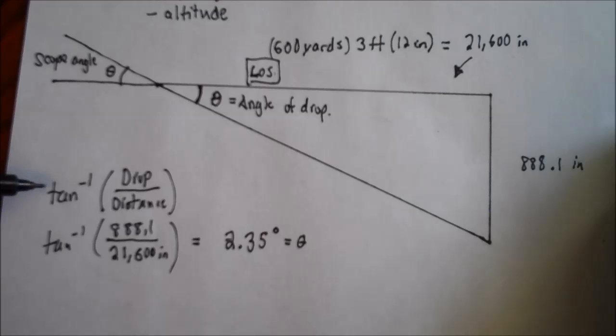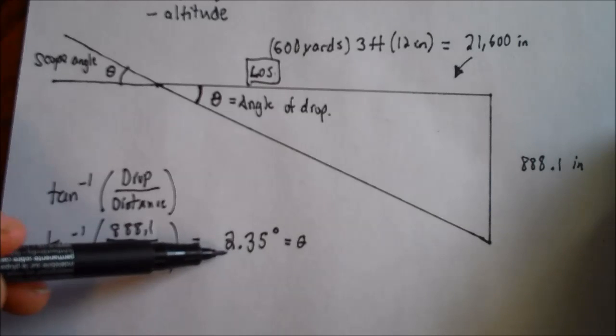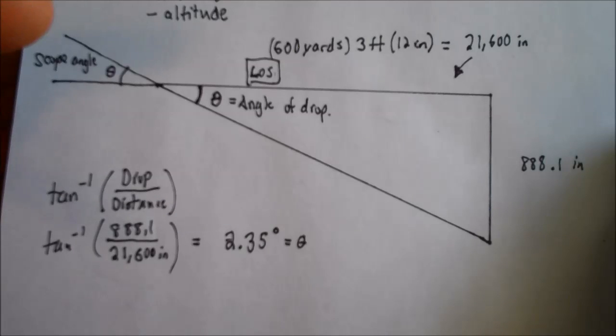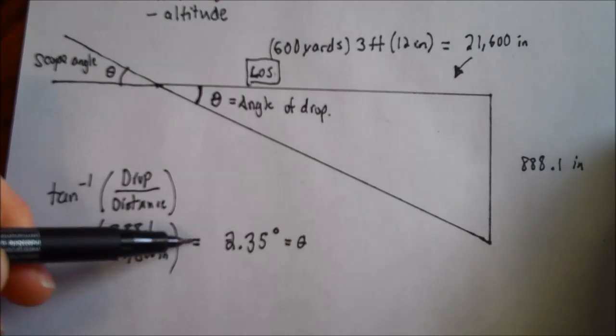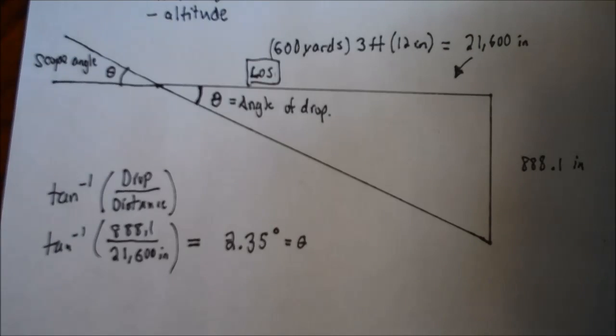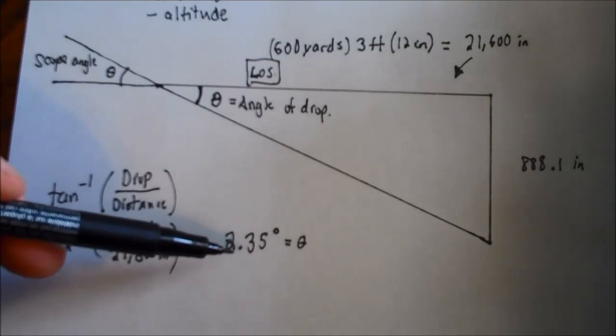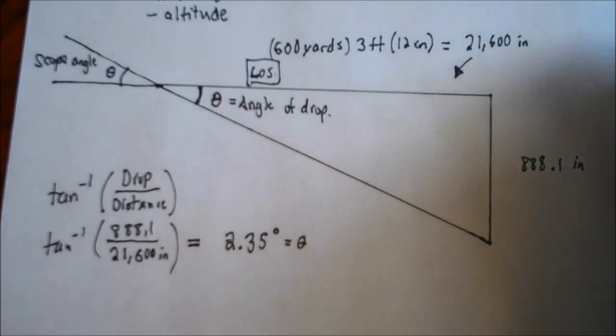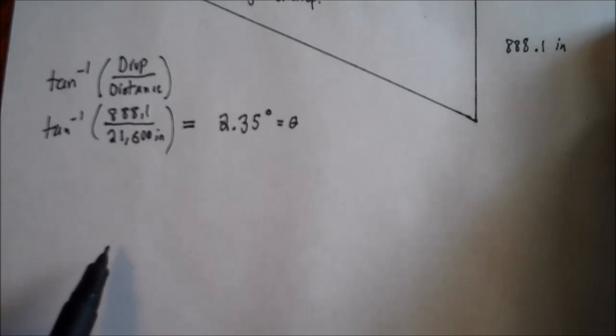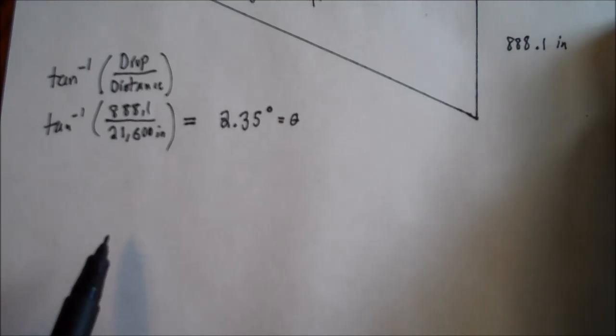So now we know that we want to try and get our scope to be as close to 2.35 degrees as we can. Tilted 2.35 degrees down so that we'll see the bullets impacting in our scope. The next step is now we want to use that 2.35 degrees and we want to see how we can get that on our actual rifle. Now you'll have to get your rifle, get the scope, and start taking a look at them. So the first thing you want to figure out is, let's say this is the top of your rifle.